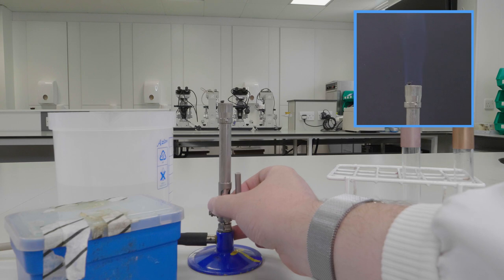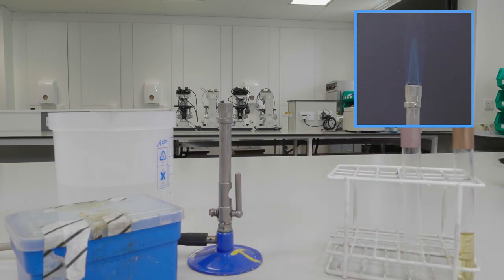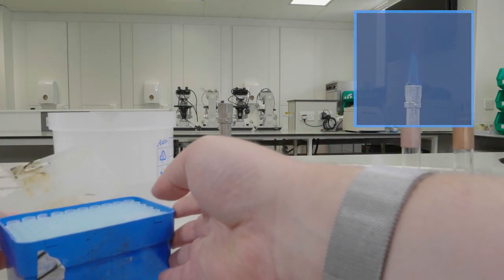Let's get working. Turn on your Bunsen to the blue flame and place a pipette tip on the end of your pipette.